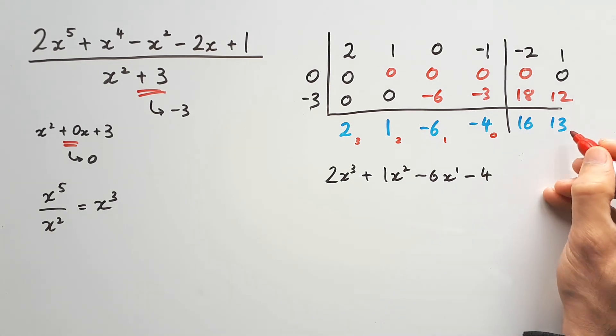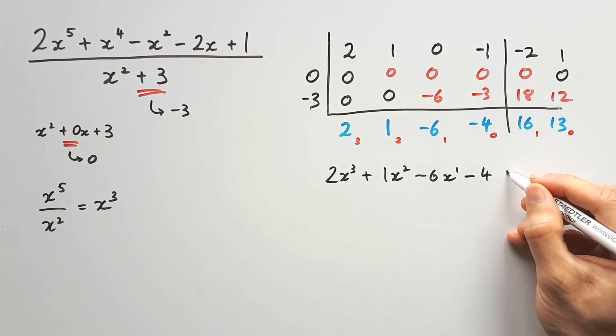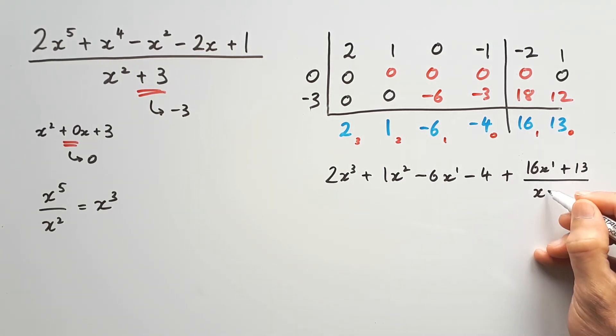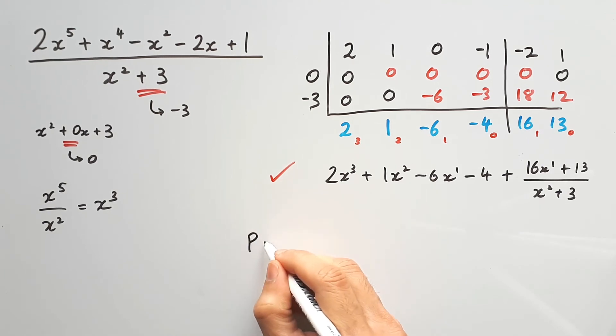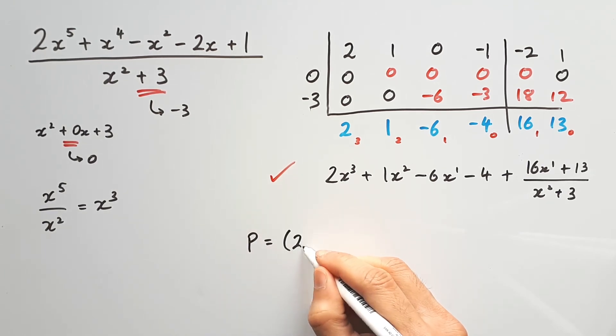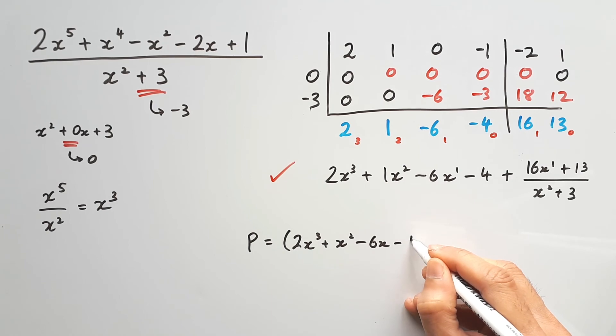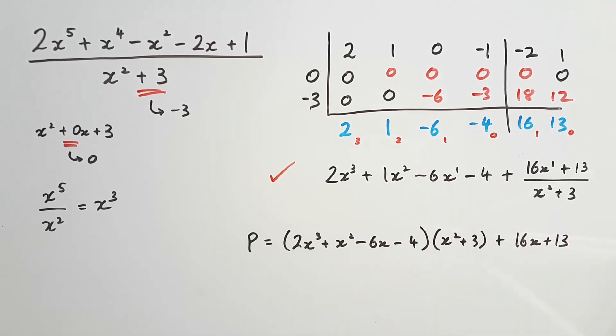And with the remainder, the powers are 0 and 1, and so it is still a linear expression, which means we're adding 16x plus 13 over our divisor x squared plus 3. And once again, this is just the usual form, but you could write it as a rephrased polynomial, if that's what they want in the question, as 2x cubed plus x squared minus 6x minus 4 times x squared plus 3 plus 16x plus 13. If you expand that, you should get back your original fifth degree polynomial that you were trying to divide in the first place.